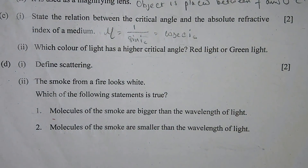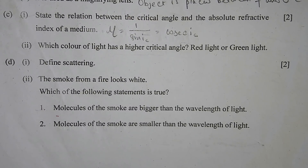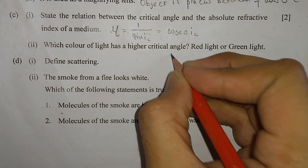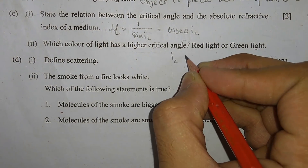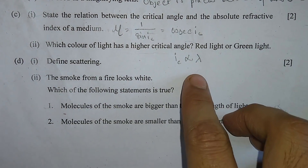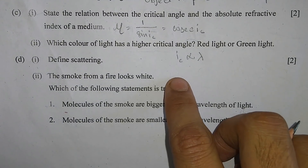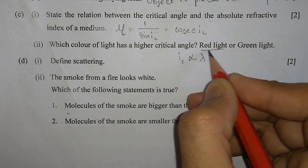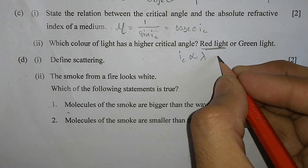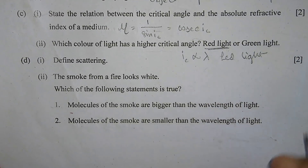Part C, number 2: Which colour of light has a higher critical angle — red light or green light? Critical angle is directly proportional to wavelength. The light having the higher wavelength will have a higher critical angle. Since red light has a higher wavelength, therefore red light will have a higher critical angle.